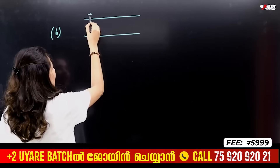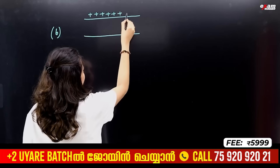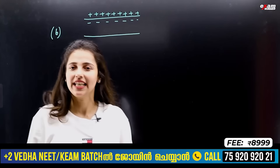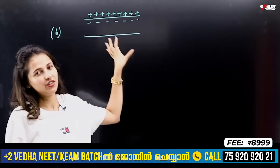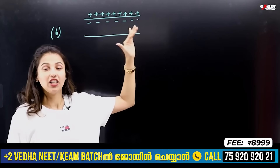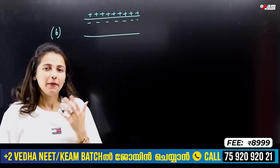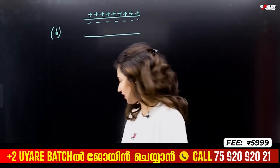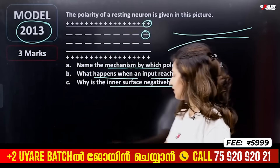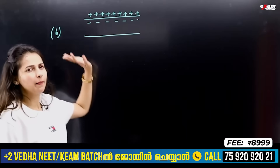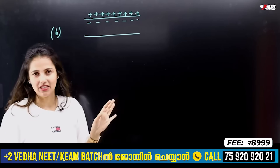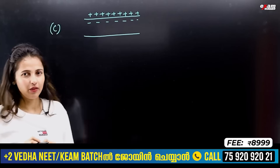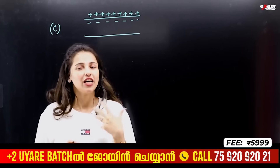We are looking at the resting membrane and resting potential. What is resting potential? At the same time, we are looking at the axon with the negative charge on the inner membrane. If we have a positive and negative charge on the membrane, why is the inner surface negatively charged?